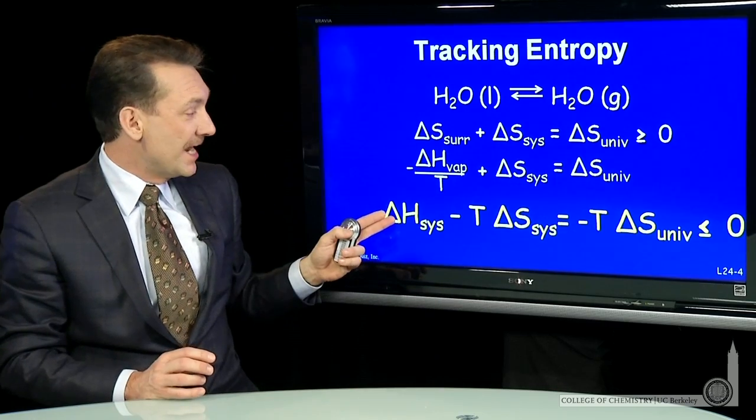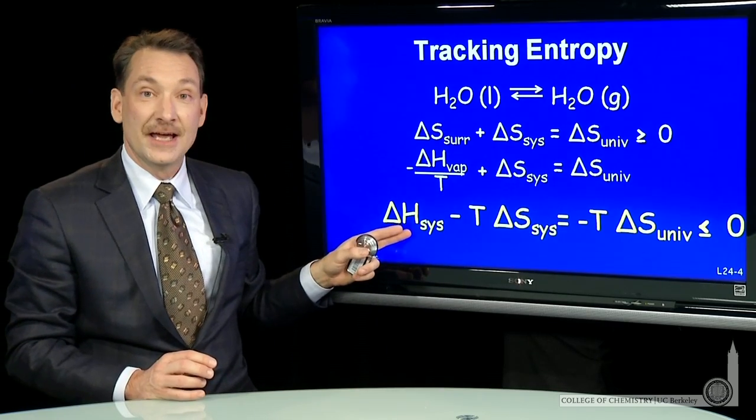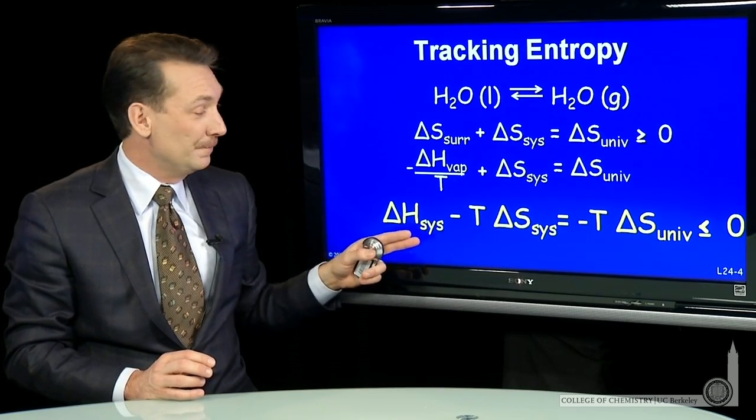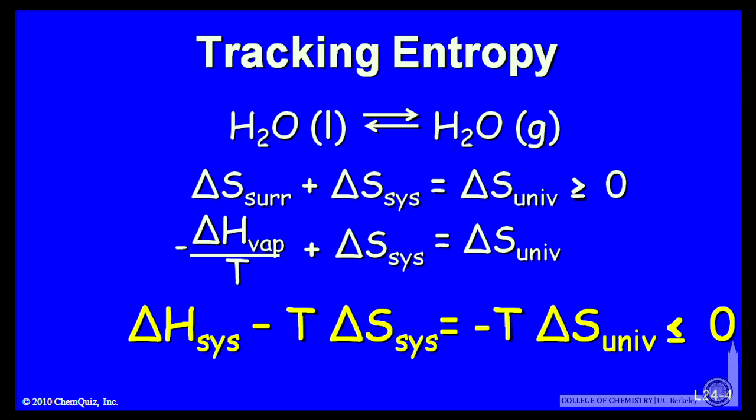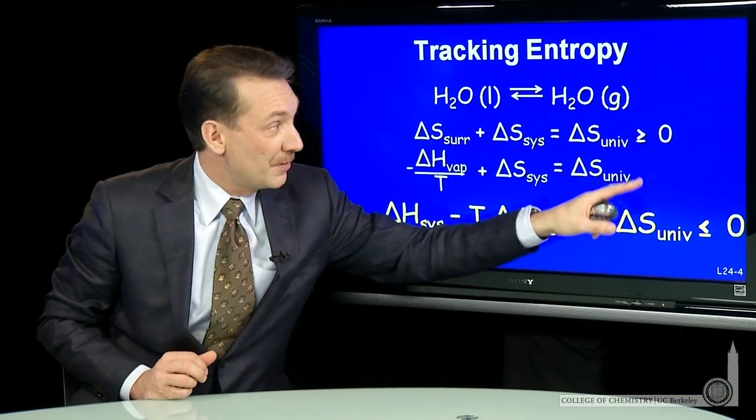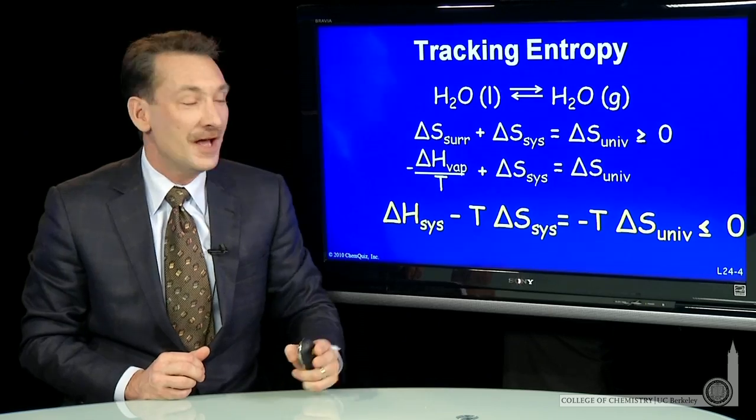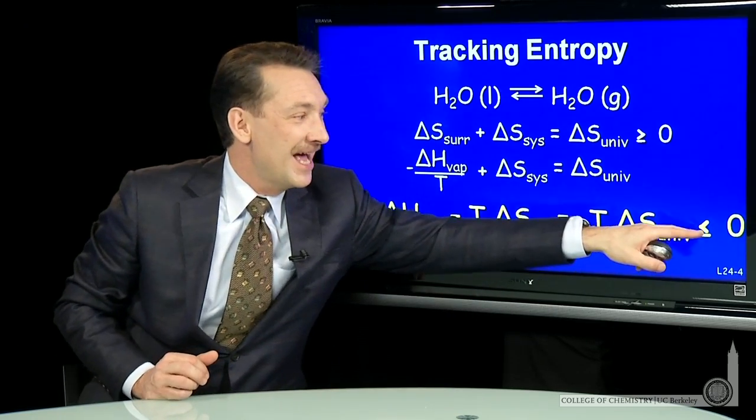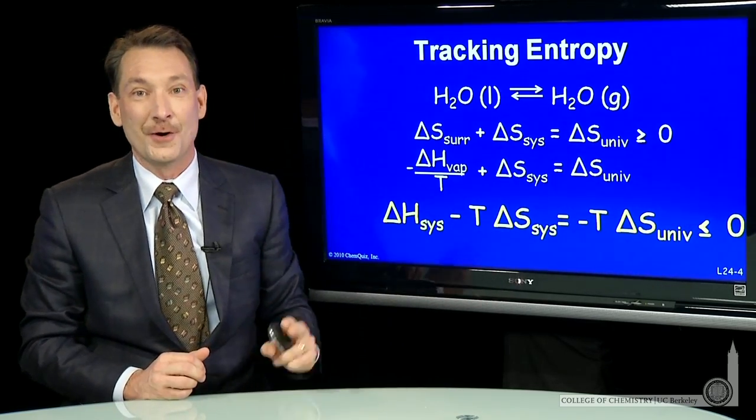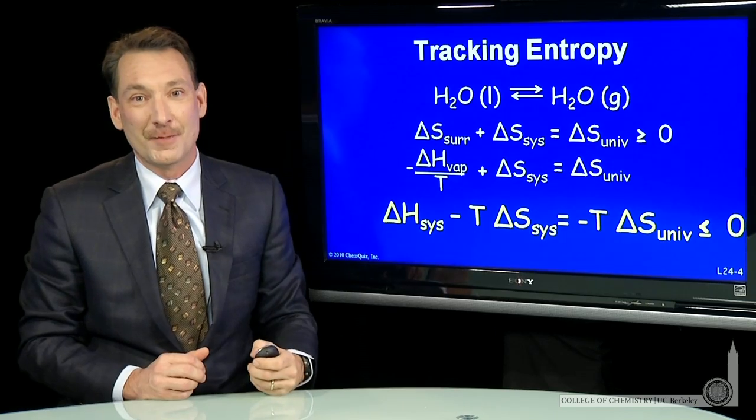I'll multiply through this by negative T, and I get the enthalpy change of the system minus T times the entropy change in the system is minus T delta S of the universe. And that minus T delta S, of course, I've multiplied through by a negative sign, so that changes the direction of my inequality. So when minus T delta S is less than 0, the forward direction is favored by the universe.